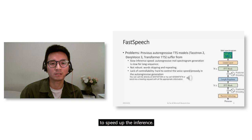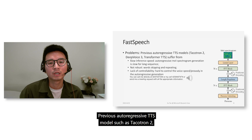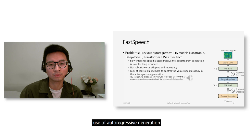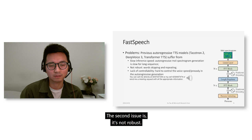Previous autoregressive TTS models such as Tacotron 2, DeepVoice 3, and Transformer TTS suffer from the following issues. The first is slow inference speed due to autoregressive generation over long speech sequences. The second issue is robustness — the generated speech often has word-skipping and repeating issues.